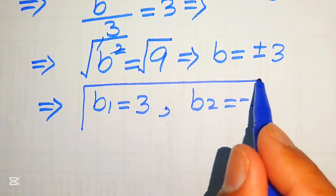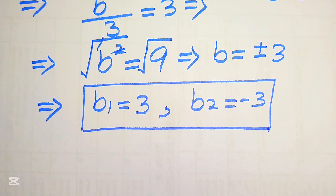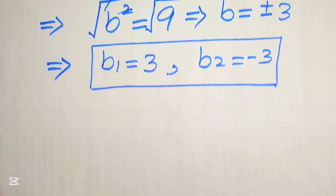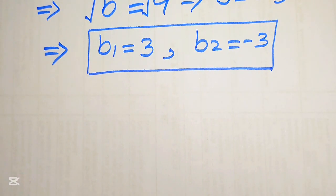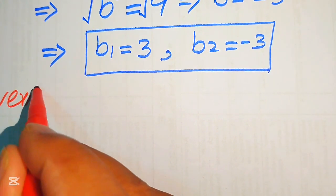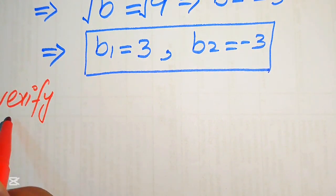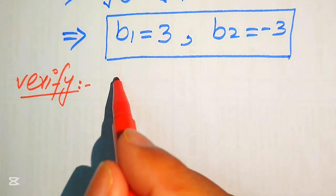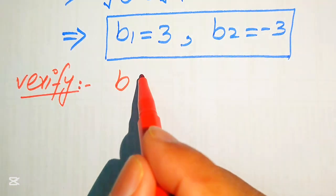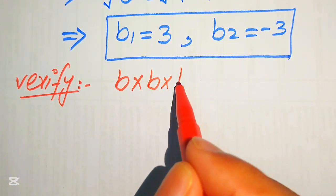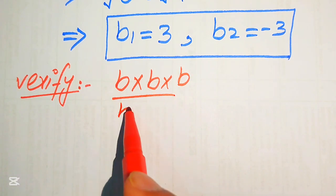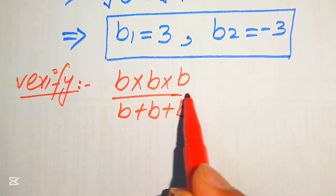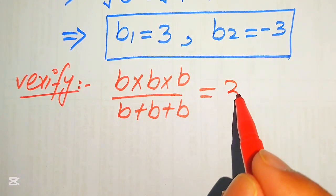So the two solution sets are b1 equals 3 and b2 equals minus 3. These are the two real solutions of the given equation and this is our final answer. Now we will verify whether these two solutions satisfy the original equation: b times b times b divided by b plus b plus b equals 3.